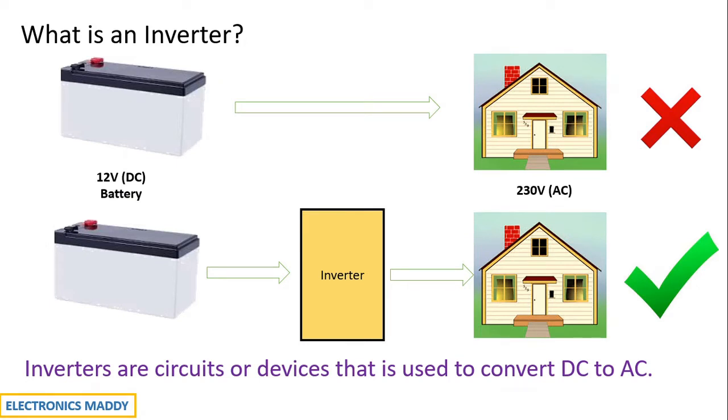However, 12V can be increased to 230V AC by having some additional circuits like a boost converter or having a transformer. So that is possible. But what I am trying to say is inverters are circuits or devices that are used to convert DC to AC. You can use it for industrial applications and a lot of other applications where you want DC to be converted to AC. How do we achieve that? We need to have a circuit. Let us try to look into it.